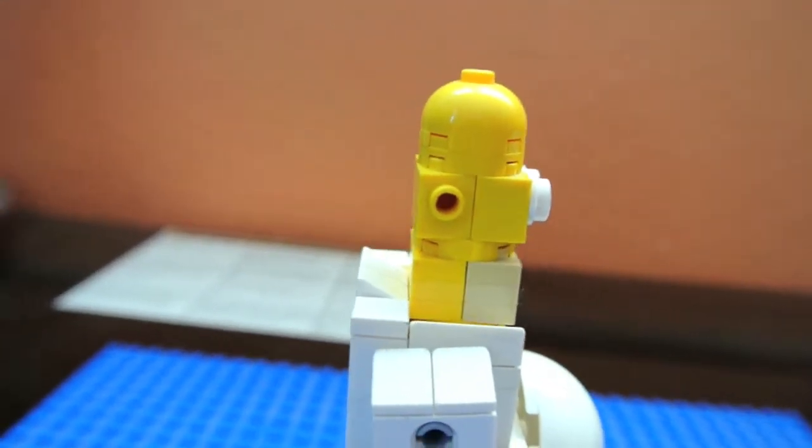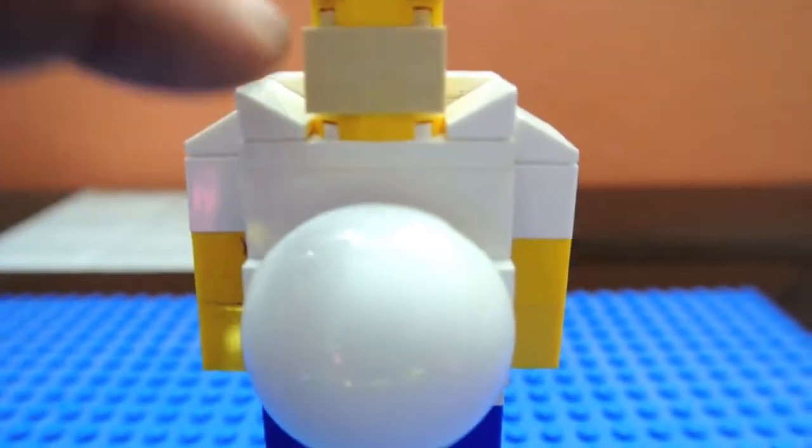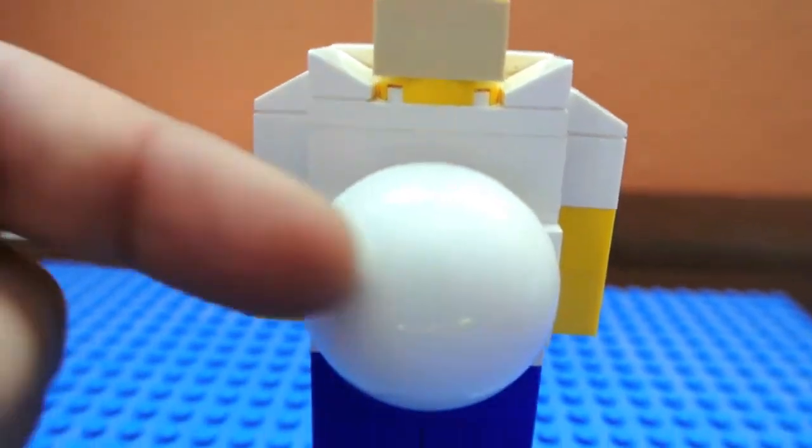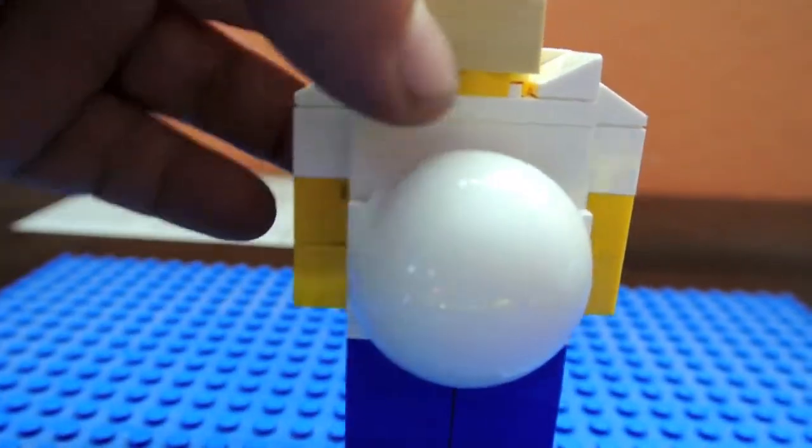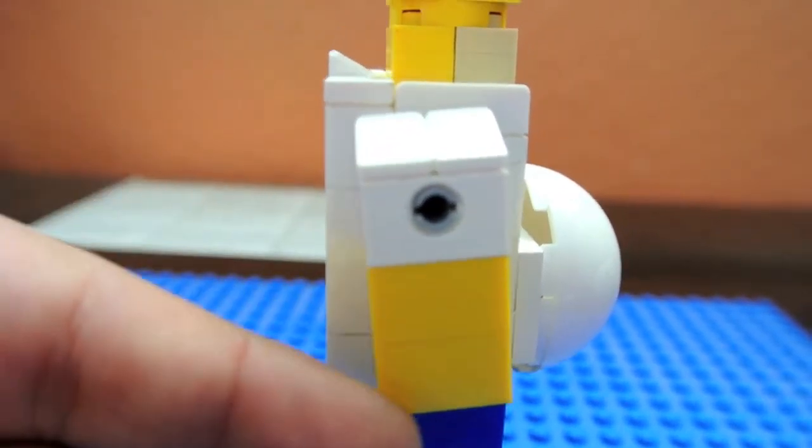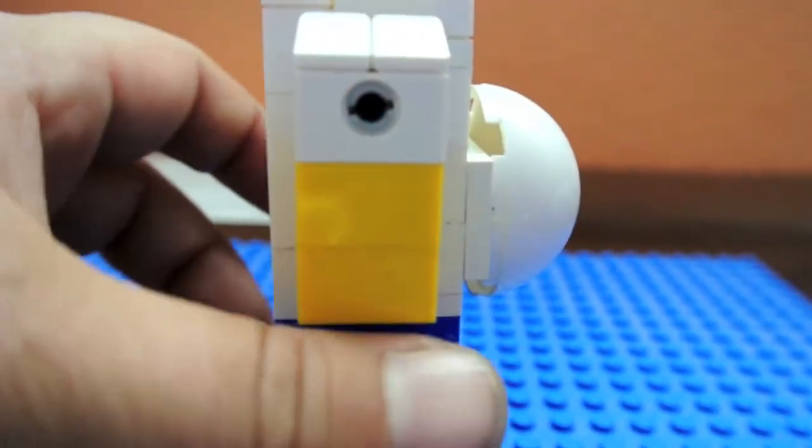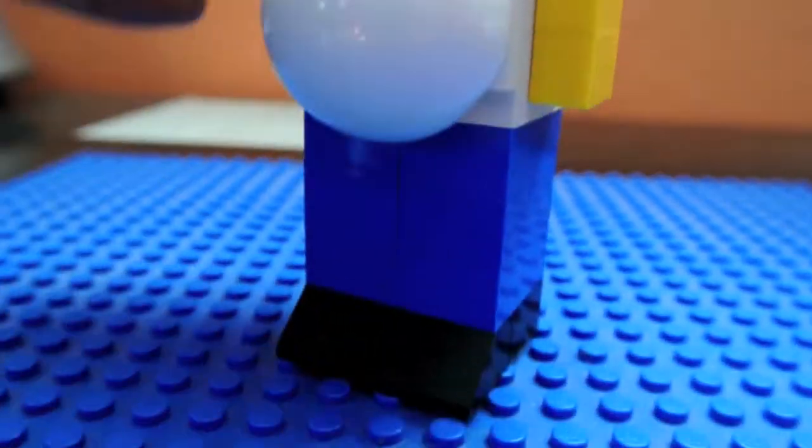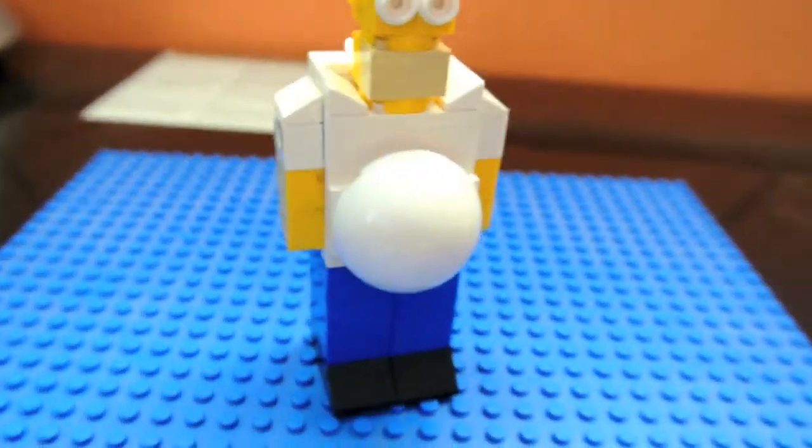So turn Homer to the side. He's in his classic white shirt. These are supposed to be collars, stomach, his arms, shoulders, and his arms and hands. And Homer's blue pants and black shoes.